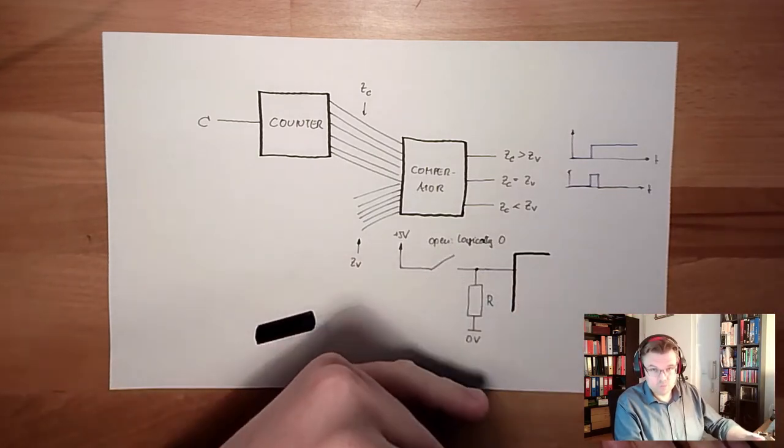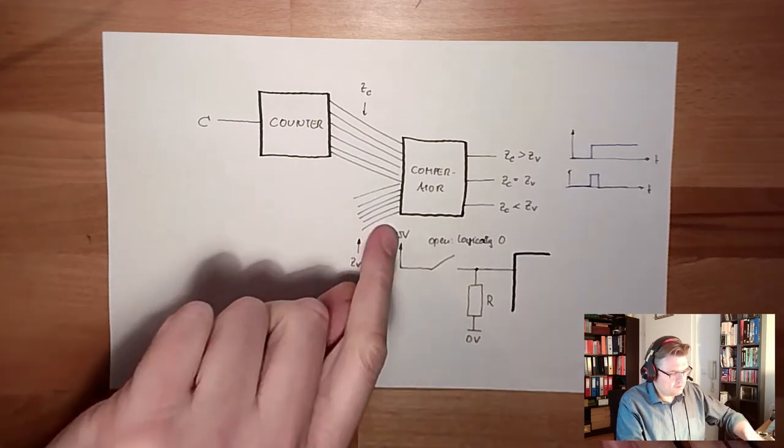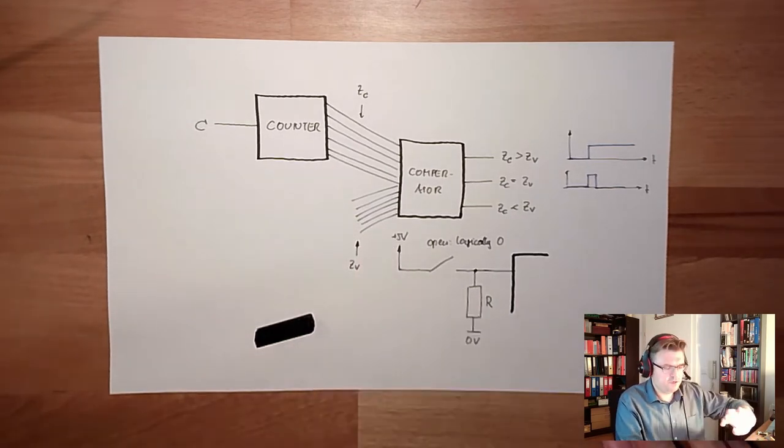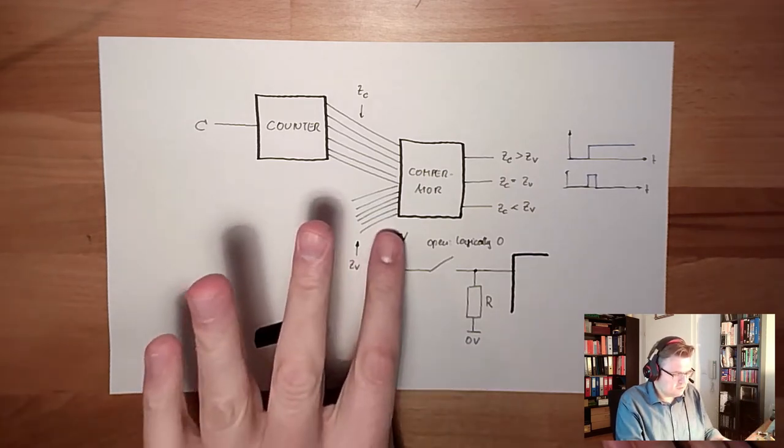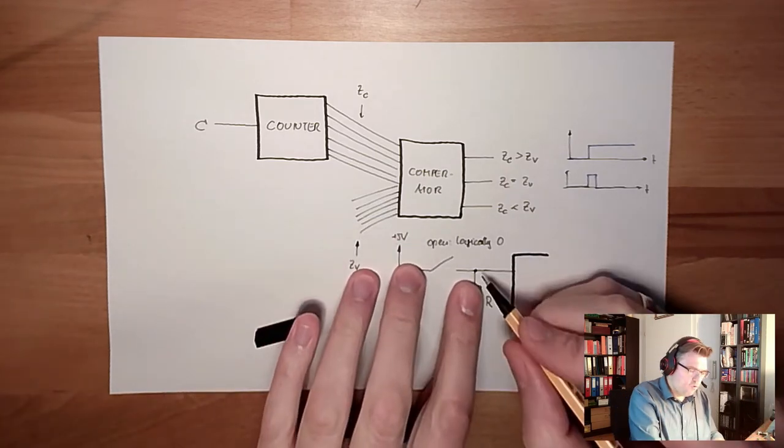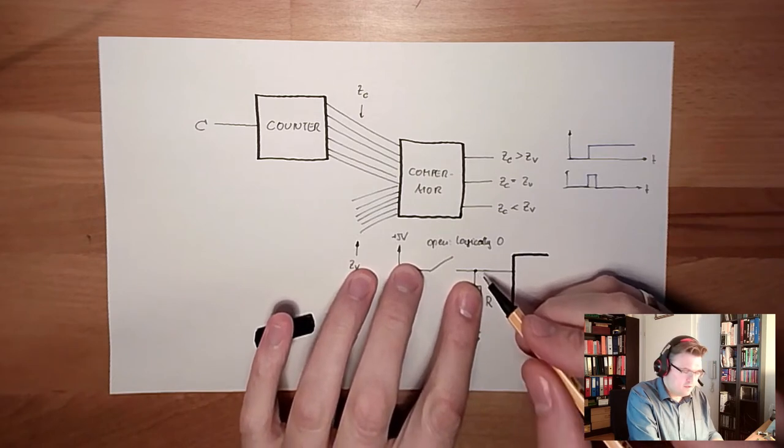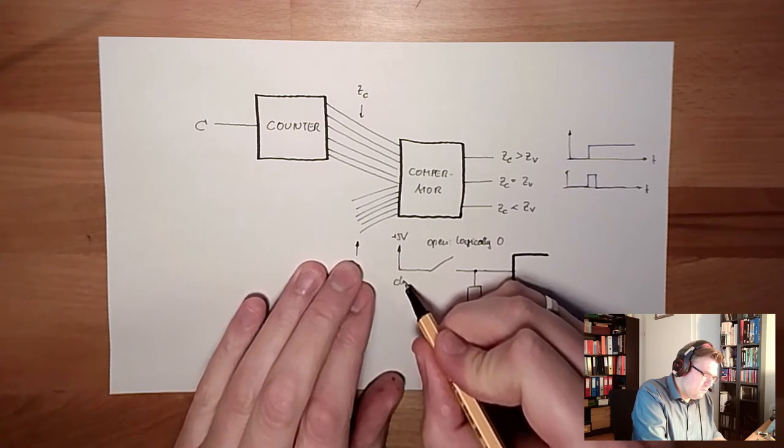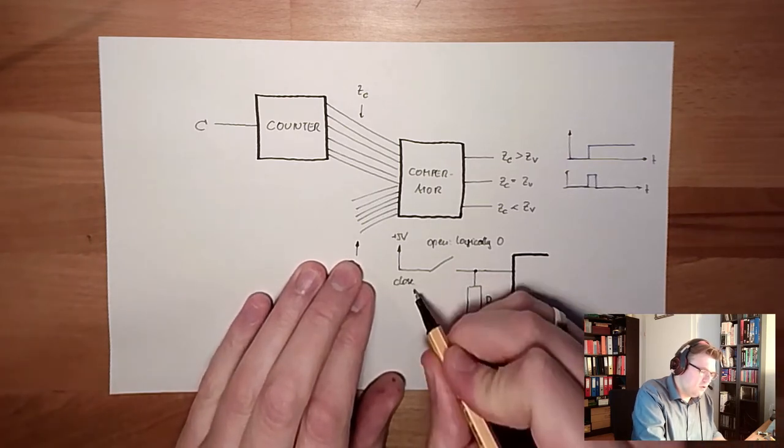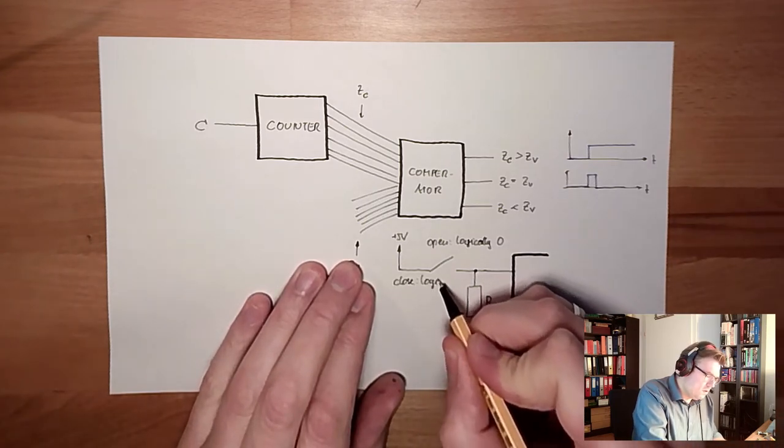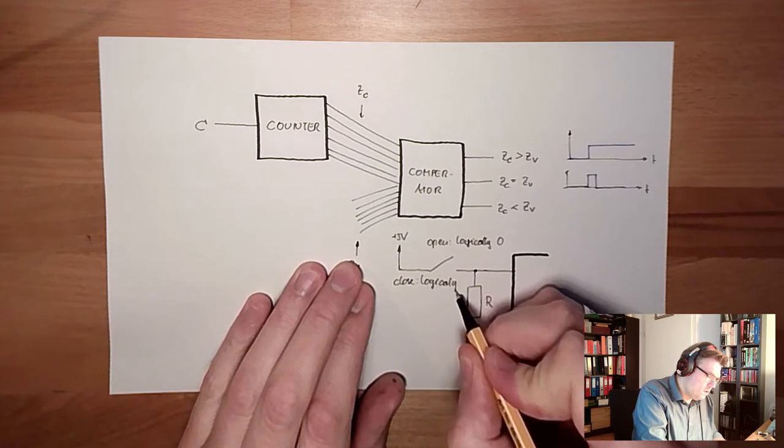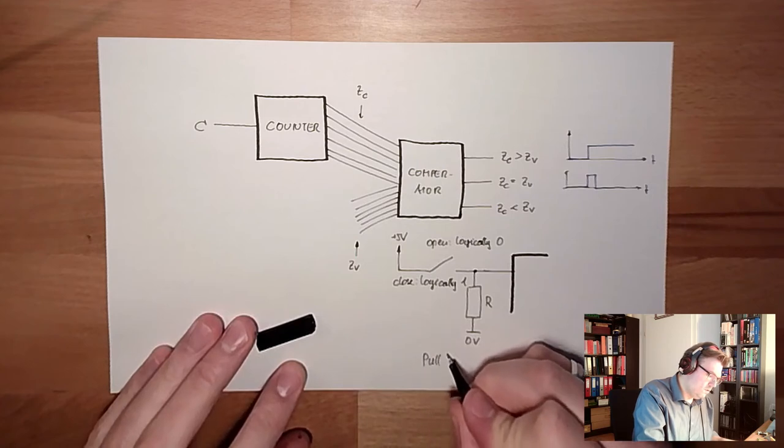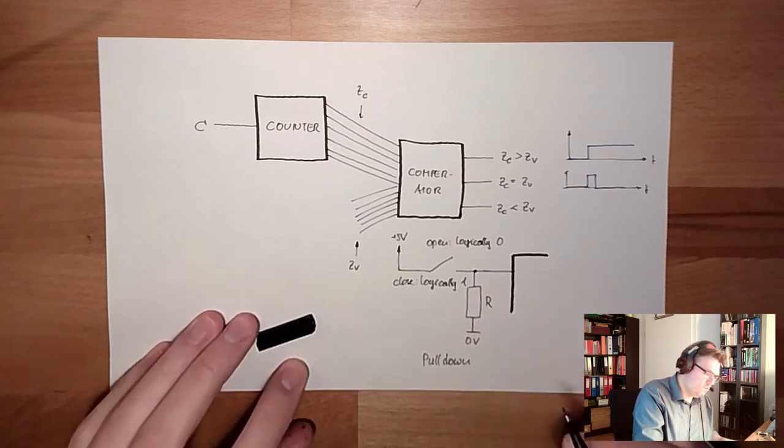And then if I close it, I have this 5V here. And if the resistor is big enough, usually you use quite big resistors, so that here are also almost 5V left. Then if we close it, we have 5V here, logically 1. This is called pull down resistor.